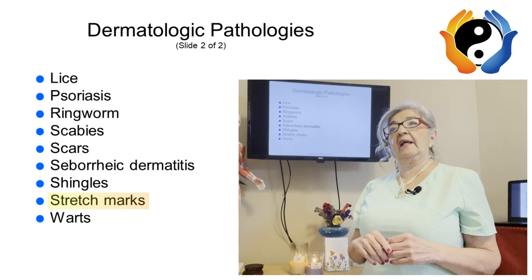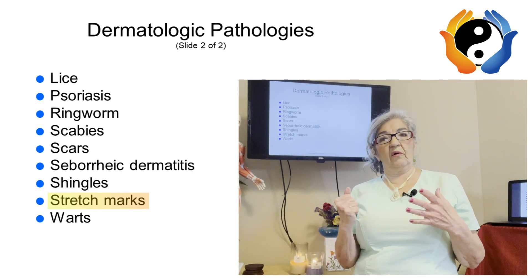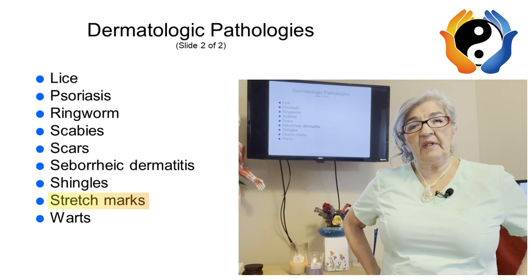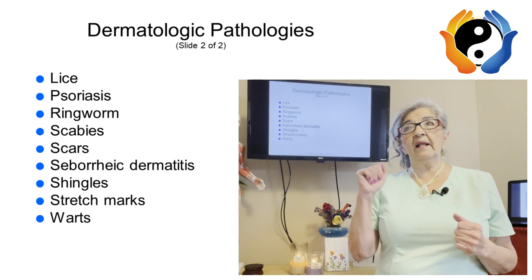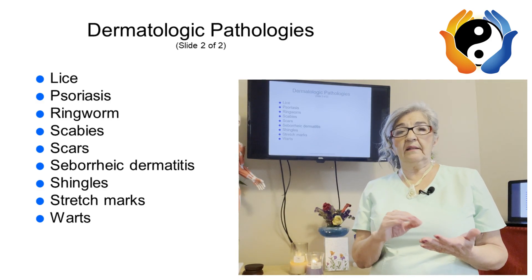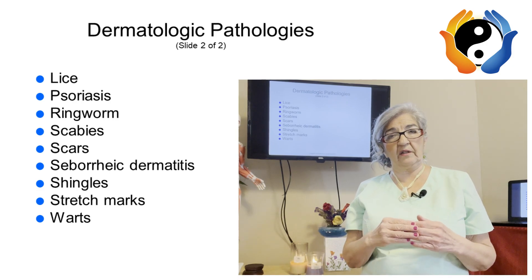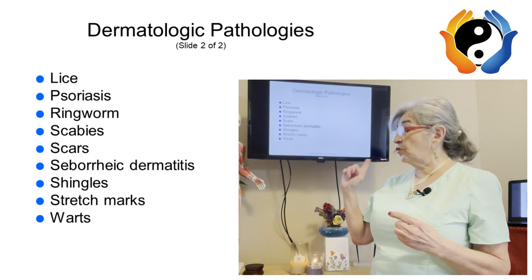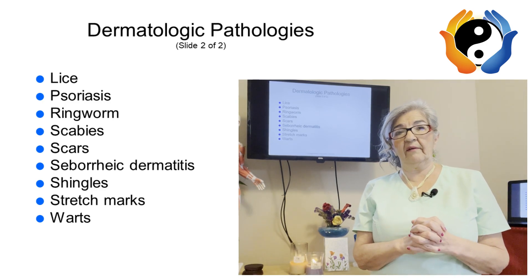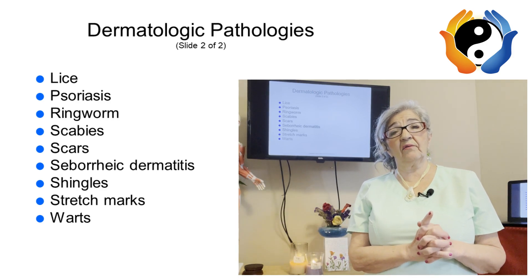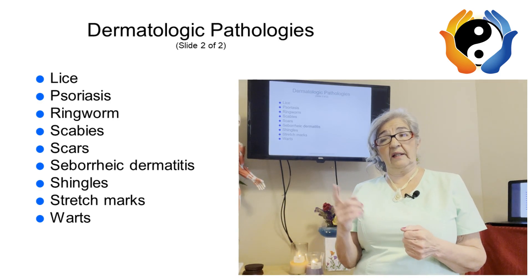Stretch marks are a thinning of the skin, usually due to pregnancy, sudden weight gain, or steroids. They're common in the abdomen, hips, buttocks, and thighs. Unlike scars, stretch marks do not involve an overproduction of collagen — the skin is actually thinner. You don't want to pull them open or try to stretch them out, and unfortunately massage does not get rid of stretch marks — it's not a collagen buildup like with regular scars.